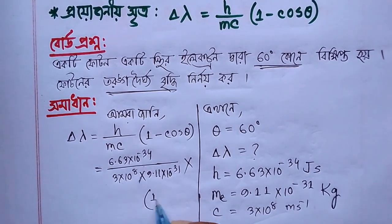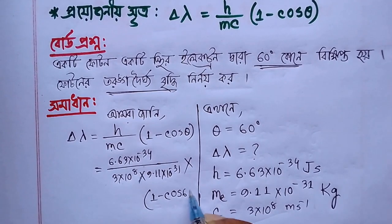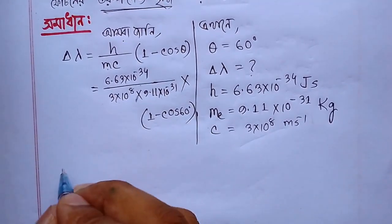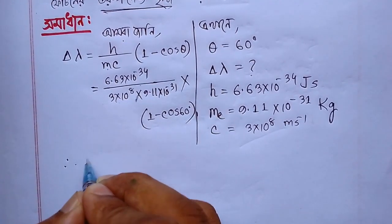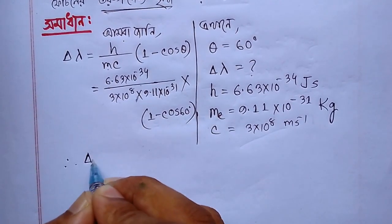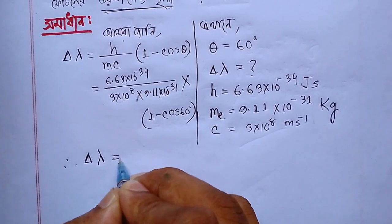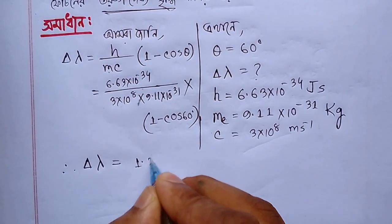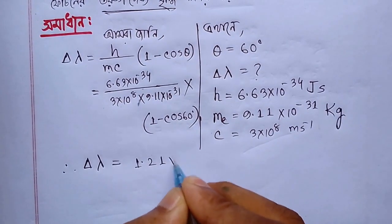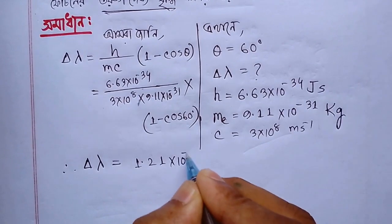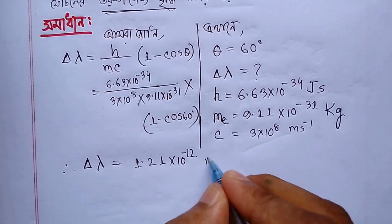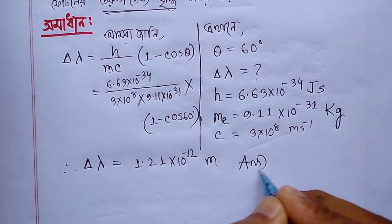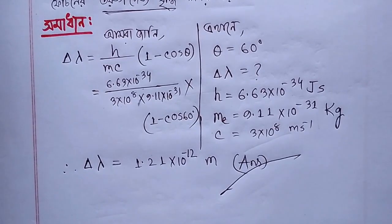So, this is a very good calculation. This is 1.21 times 10 to the power 2 minus 1. So, this is the answer.